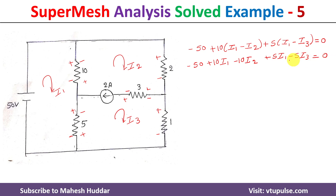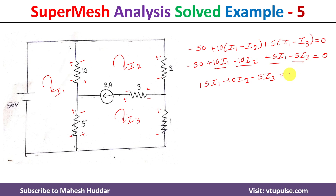This equals zero. Combining the I1 terms gives 15·I1 minus 10·I2 minus 5·I3 equals 0. Taking the constant to the right side gives 15·I1 minus 10·I2 minus 5·I3 equals 50. Make this equation number one.